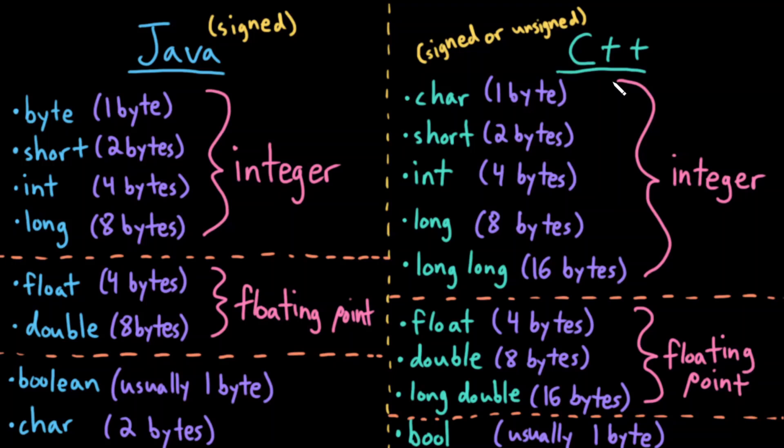In C++, we have these different integer types. We have char, which is one byte, short, which is two bytes, int, which is four bytes, long, which is eight bytes, and long long, which is 16 bytes.